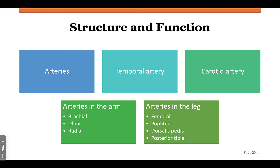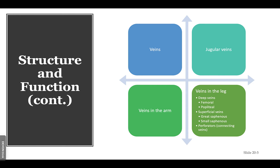A vein carries blood back to the heart — it's a low pressure system — versus an artery, which takes blood away from the heart and pumps it out at high pressure. We have deep veins, superficial veins, and perforators. Since veins are a low pressure system, they depend on muscle movement to return blood to the heart, and use valves to keep blood moving. A perforator is a connector from one vein to another.